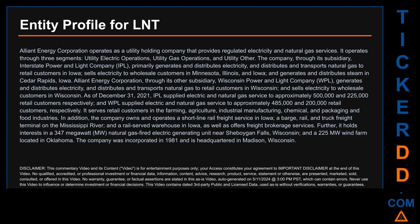IPL sells electricity to wholesale customers in Minnesota, Illinois, and Iowa, and generates and distributes steam in Cedar Rapids, Iowa. Alliant Energy, through its other subsidiary Wisconsin Power and Light Company (WPL), generates and distributes electricity and distributes and transports natural gas to retail customers in Wisconsin and sells electricity to wholesale customers in Wisconsin. As of December 31, 2021, IPL supplied electric and natural gas service to approximately 500,400,000 and 225,000 retail customers respectively.